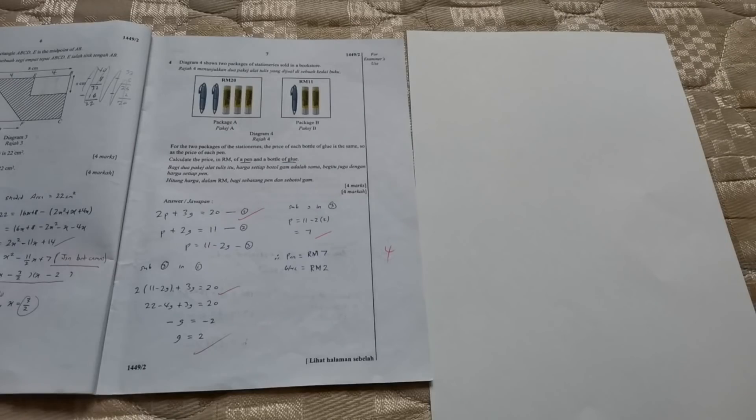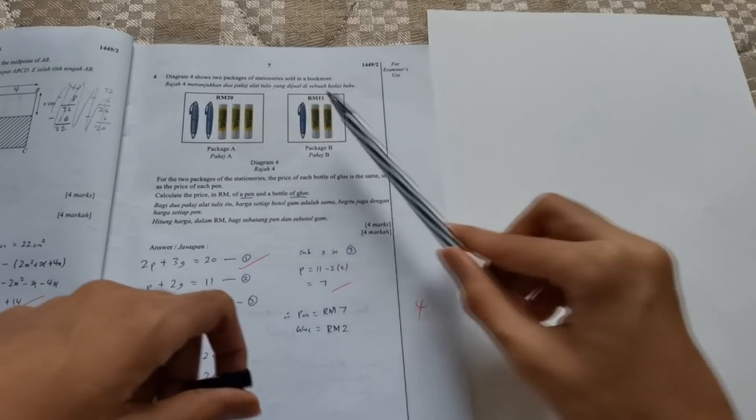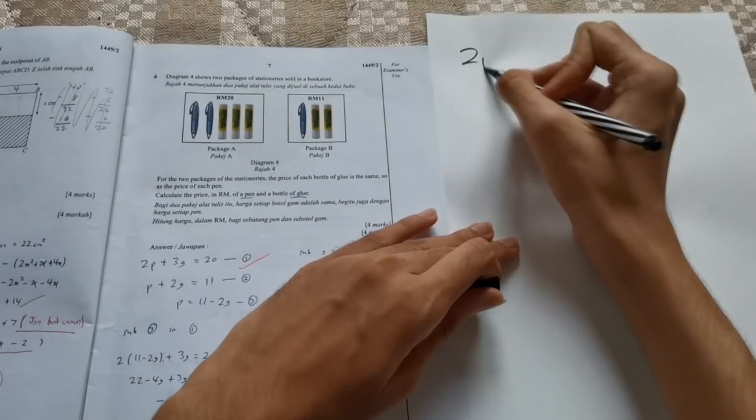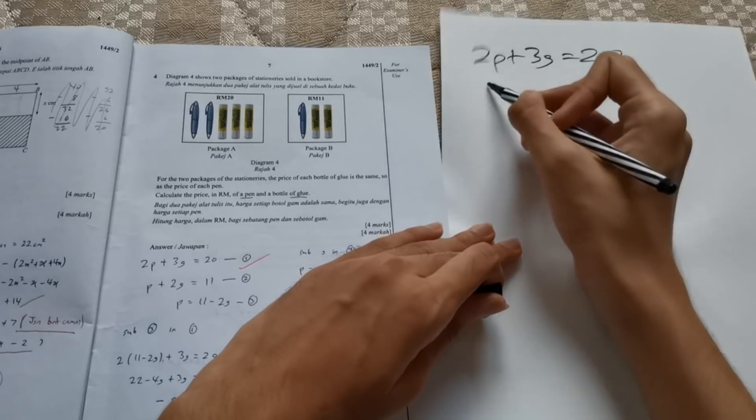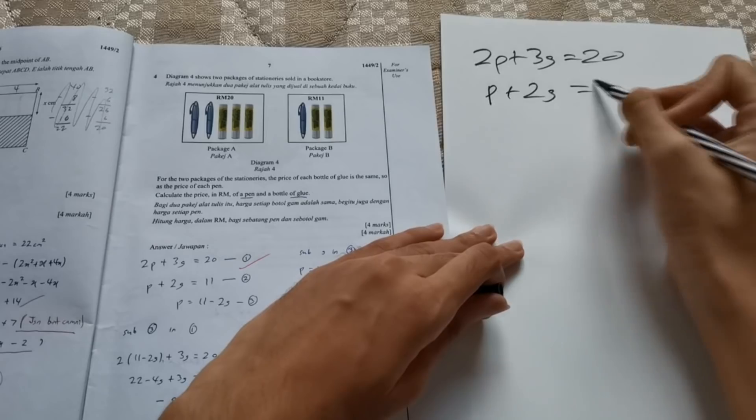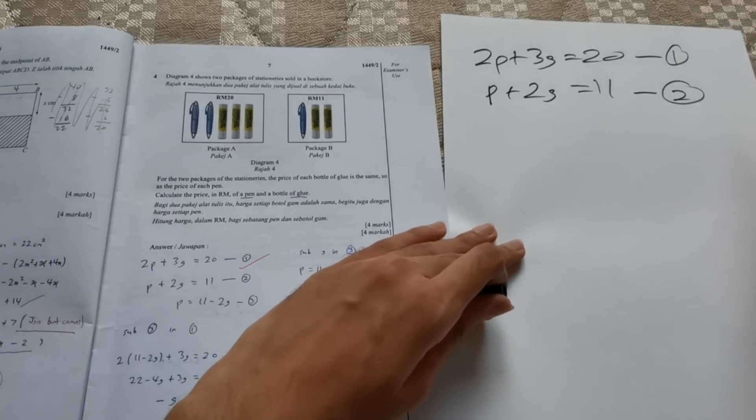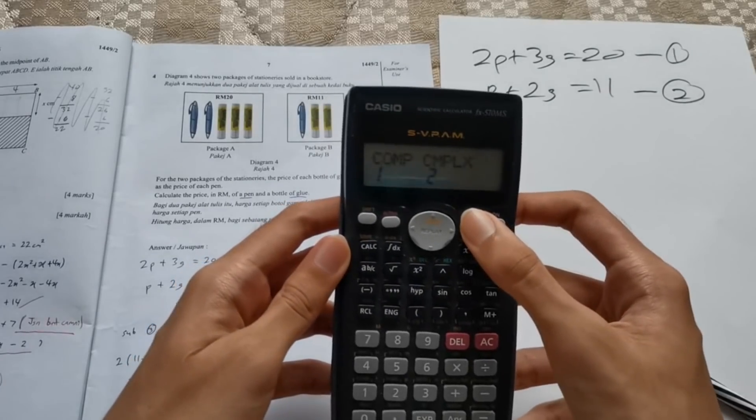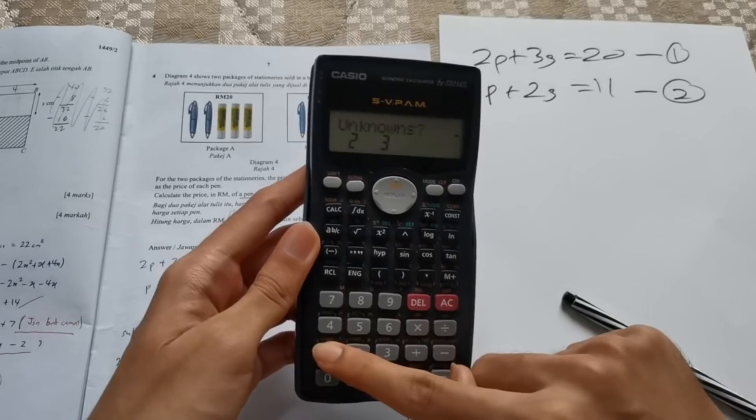In paper 2, section A, there's always a simultaneous equation question. And you cannot get this wrong because you can literally check your answer using the calculator. For example, this question. So based on these two pictures, we can conclude that 2P plus 3G equals to 20. And P plus 2G equals to 11.